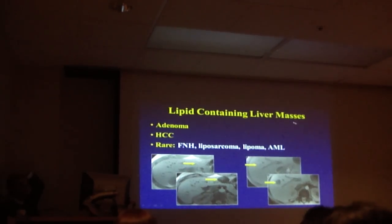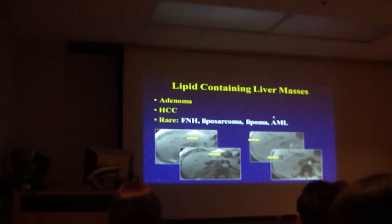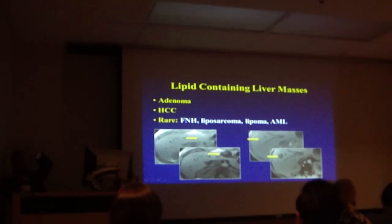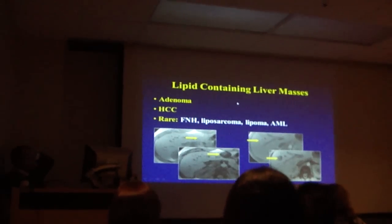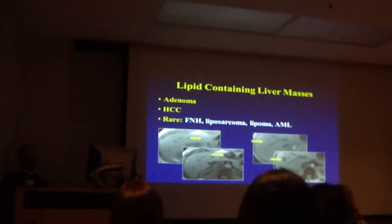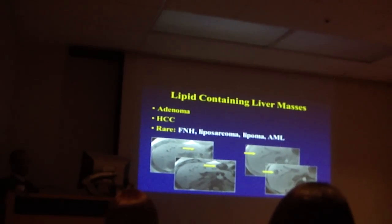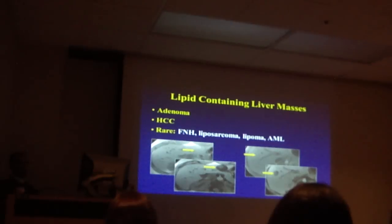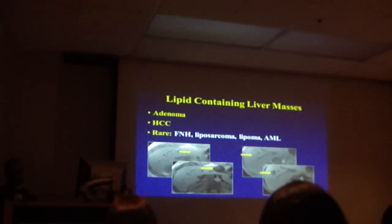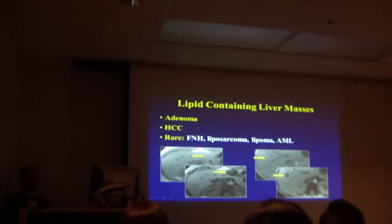The third category is lipid-containing liver masses: adenoma, HCC, and rarely FNH, liposarcoma, metastases, lipoma, or AML. Which one is HCC here? Apply the two features — can you draw it out? The lesion is heterogeneous. Reasons for an adenoma being heterogeneous: it can contain fat or hemorrhage. While heterogeneous, can you draw it out? The most worrisome feature is if the lesion is washing out. This lesion here is well-defined — this was an HCC. The other was an adenoma.